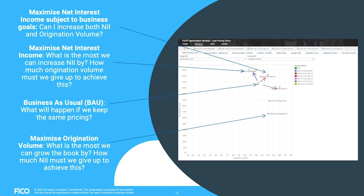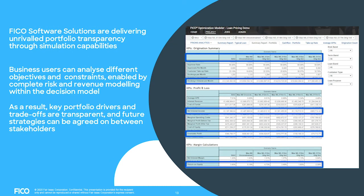That brings me back to the starting question: what if. The what-if questions can be answered with this efficient frontier. Once implemented — and this is a screenshot from our solution — you see different points where you can operate your portfolio, answering questions like: what is the maximum net interest income increase, and how much origination volume must you give up to achieve it? And vice versa, if you maximize origination volume, how much net interest income must you give up? Above and beyond pure optimization, the approach provides a rich simulation and scenario analysis capability.